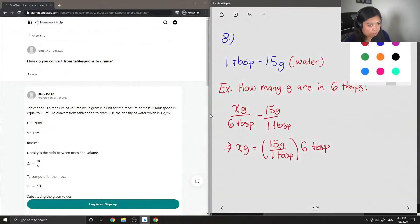And you'll know that you did it correctly if your tablespoons cancel out. And we're left with a value in grams, which is just 90. So 15 times 6 equals 90 grams.